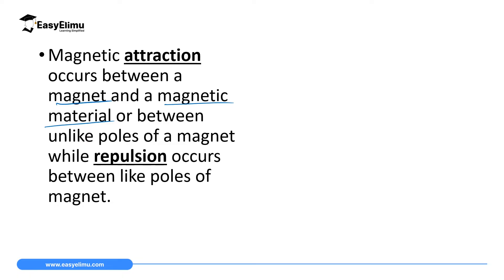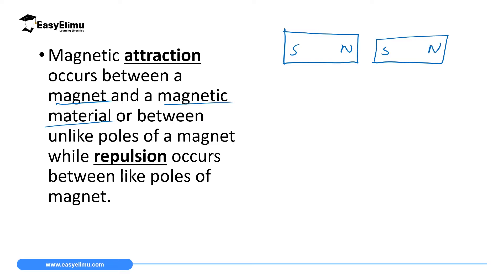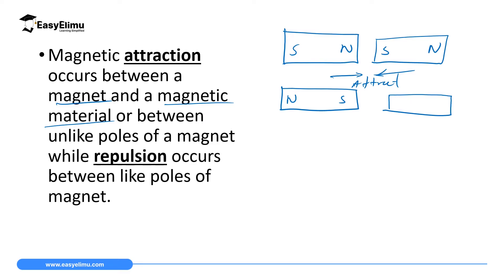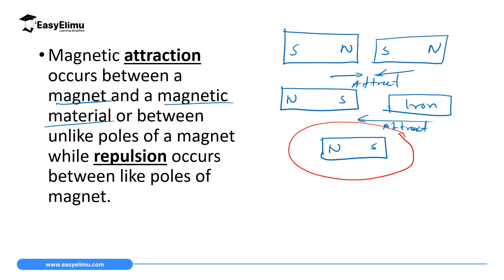Attraction takes place when we have two unlike or opposite poles close to each other. Also, if you have a magnet with a north pole and south pole and a magnetic material like iron, the magnet will attract the iron. Around a magnet there is a place where we have magnetic influence, and we call it a magnetic field.